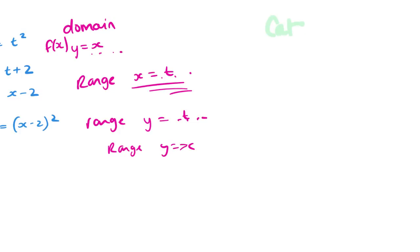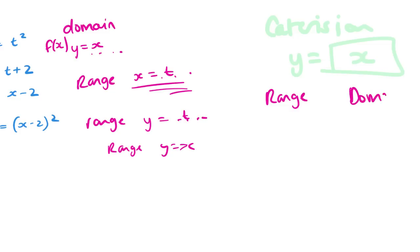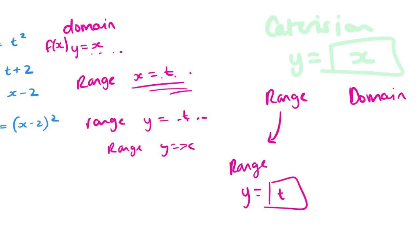Once you put it in Cartesian form — Cartesian form means y equals with x's in it — to find the range of the Cartesian equation, the range of the Cartesian is the range of the one with the y's and t's in it.